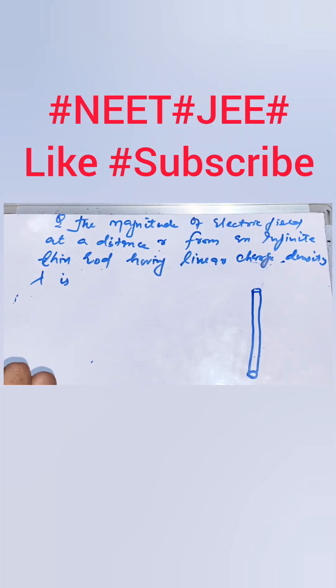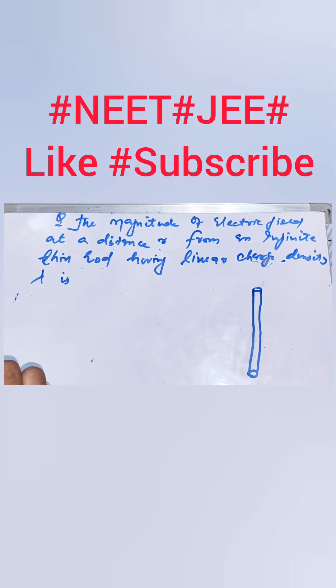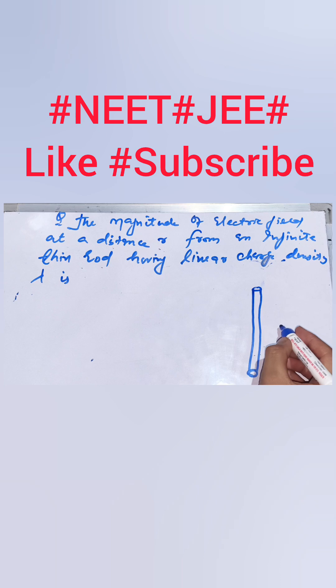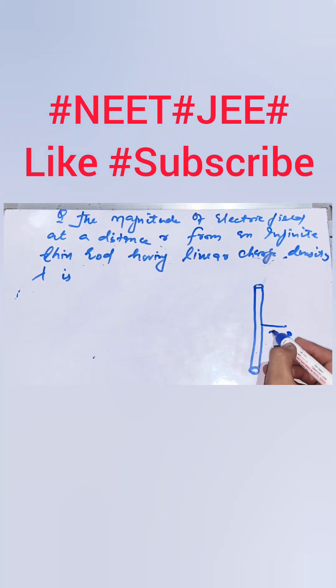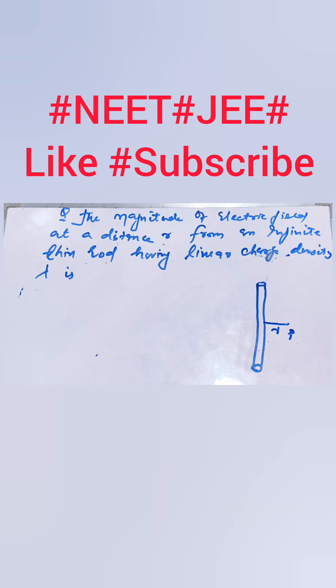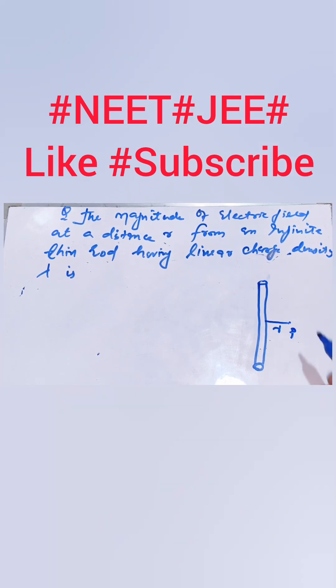Given the magnitude of electric field at a distance r from an infinite thin rod having linear density lambda, I will take a point P at a distance r from this rod. So I have to find out what is the electric field at this point P.